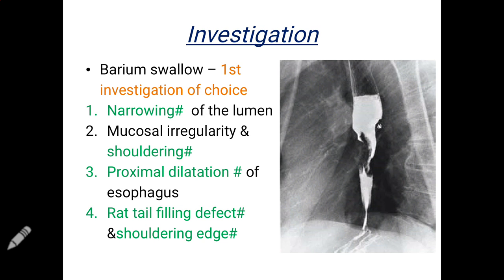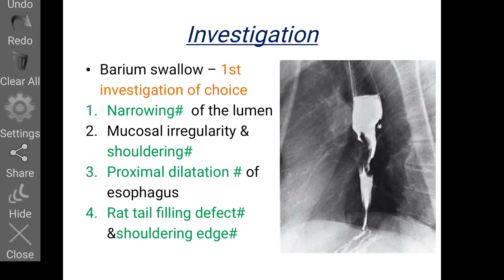For investigations, barium swallow is the first investigation of choice. On barium swallow X-ray, we see narrowing of the esophageal lumen, mucosal irregularities, and a 'shouldering' appearance, with proximal dilatation of the esophagus. In the distal esophagus, a rat-tail filling defect with a shouldering edge is observed.